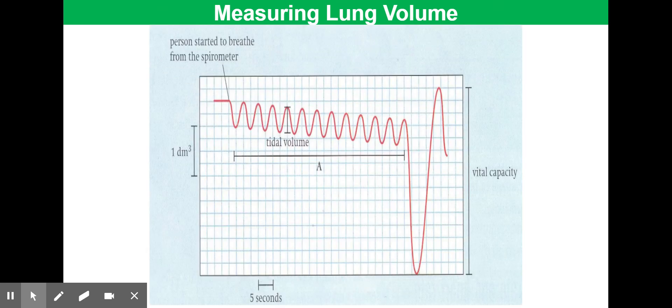The breathing rate can also be measured from a spirometer trace. You just simply need to count the number of peaks in each minute, which usually, the breathing rate at rest is usually around 12 to 14 breaths per minute.